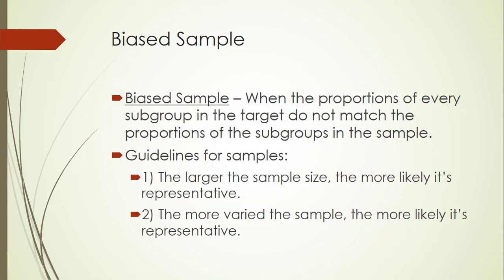The term biased sample refers to when the proportions of every subgroup in the target do not match the proportions of the subgroups in the sample. This is when the biased sample fallacy comes into play. The sample might be too biased towards a particular subgroup and may not contain enough participants from a different subgroup.